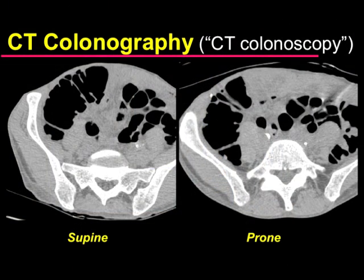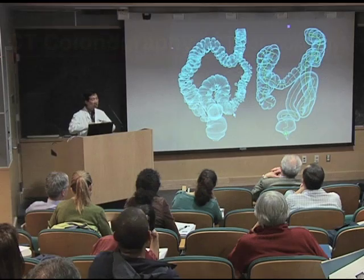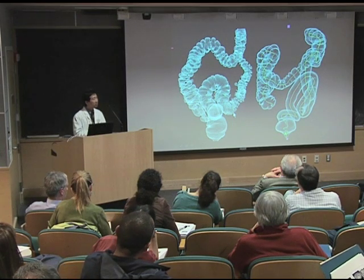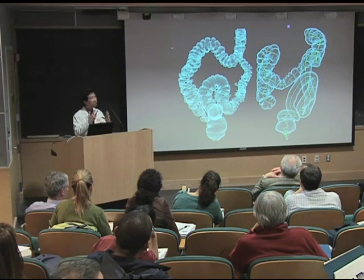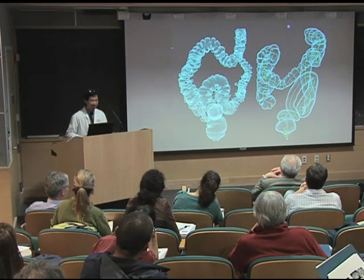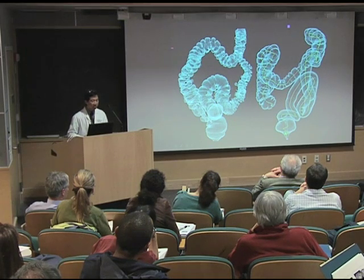A good example of how this is helpful is when we look for polyps in the colon. We can see on the two-dimensional images these little growths that can potentially become cancer in the colon. But then we can reassemble the pixels digitally into three-dimensional figures of the colon.